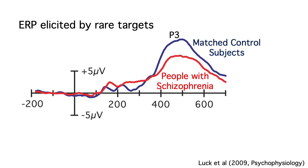Another common use of the temporal resolution of the ERP technique is to determine the nature of a difference in behavior between experimental conditions or between groups of subjects. For example, if we think more carefully about the oddball paradigm and the nature of the P3 wave, then the difference in P3 amplitude between people with schizophrenia and matched control subjects gives us a hint about the nature of cognitive impairment in schizophrenia. We'll talk about this in more detail later in this set of videos.